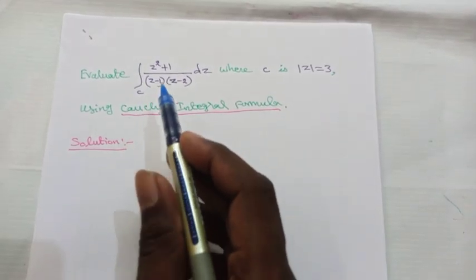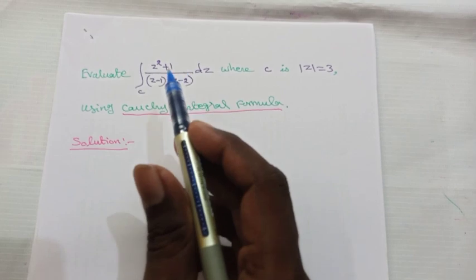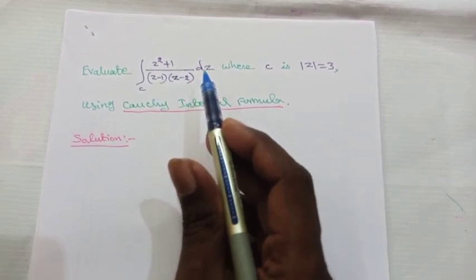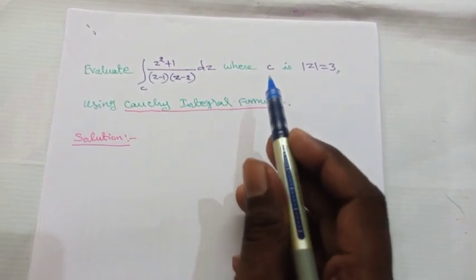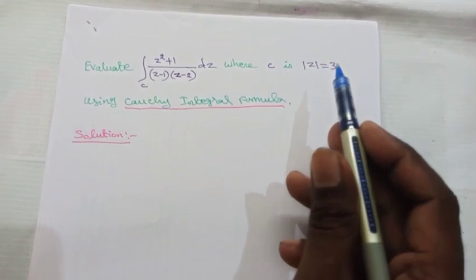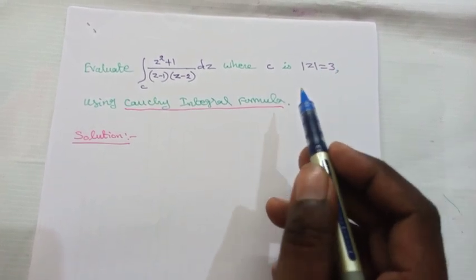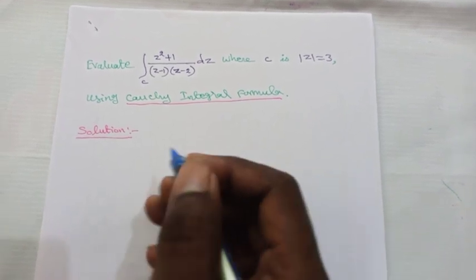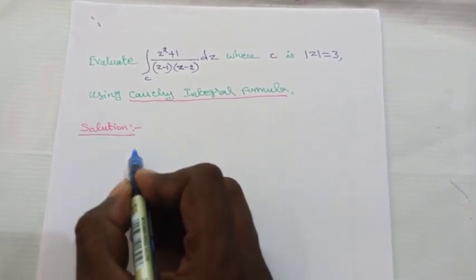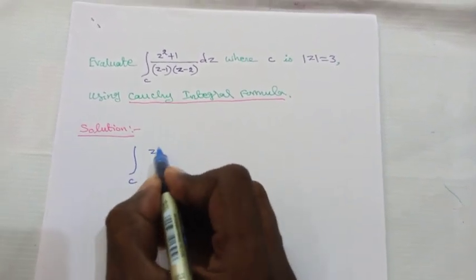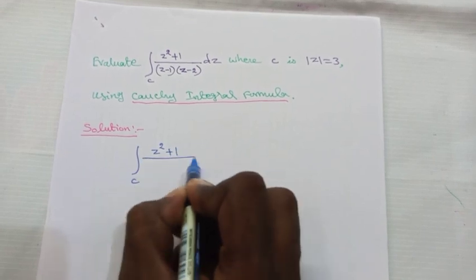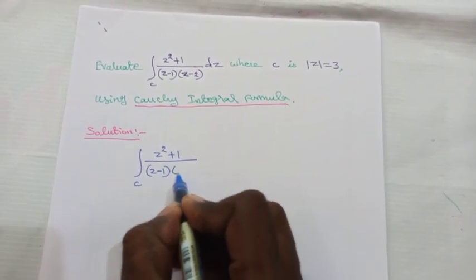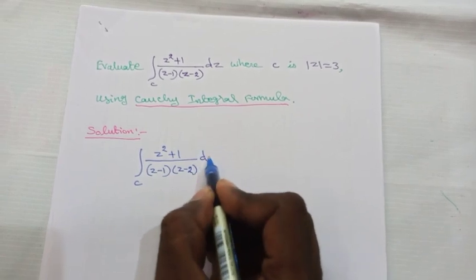Evaluate the integral over c of (z² + 1) / [(z - 1)(z - 2)] dz, where c is the circle |z| = 3, using the Cauchy integral formula.